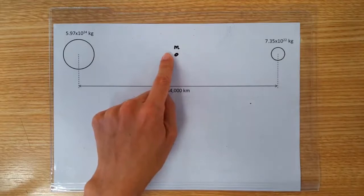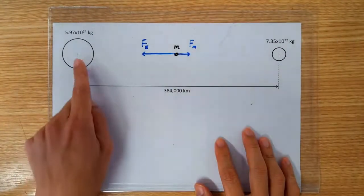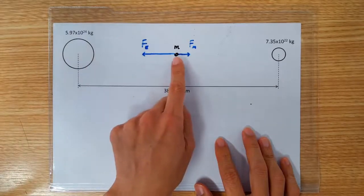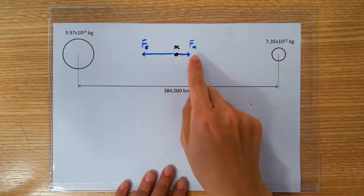Let's put a tiny little mass right at the middle. Obviously, the Earth is going to pull the mass towards the left, but the Moon is going to pull the mass towards the right.